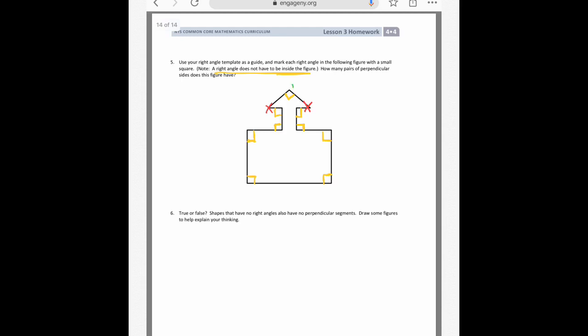And so what we'll do is we will count the number of perpendicular sides. So really it should be 1 pair per right angle. So here I have 1, 2, 3, 4, 5, 6, 7, 8, 9. So I should have 9 pairs of perpendicular sides.